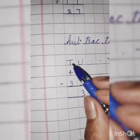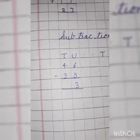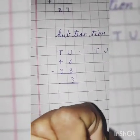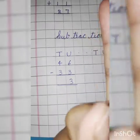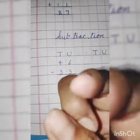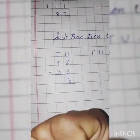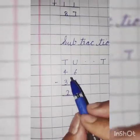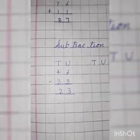Next the tens side: 4 minus 3. Throw 3, count till 4. What comes after 3? 4. How many fingers are left? 2. So answer is 2. So 46 minus 33 equals 23.